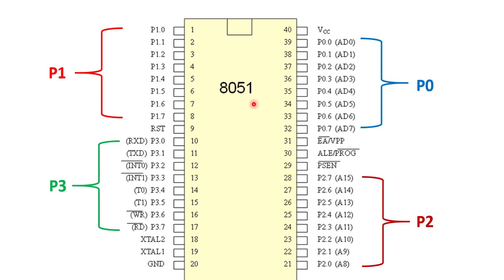So in this way, I have explained all the functions of all the pins of the 8051 microcontroller. To summarize: the 8051 has four 8-bit bidirectional I/O ports — port 0, port 1, port 2, and port 3 — each with 8 bits, giving 32 bits total. Port 1 performs only a single function as a simple I/O port, while port 0, port 2, and port 3 perform dual functions. Hope you liked the video — please like, subscribe, and share the channel.